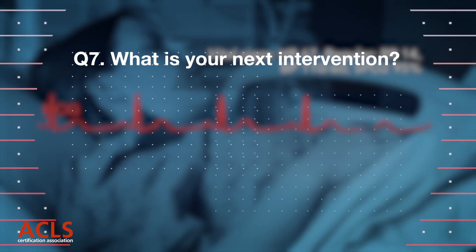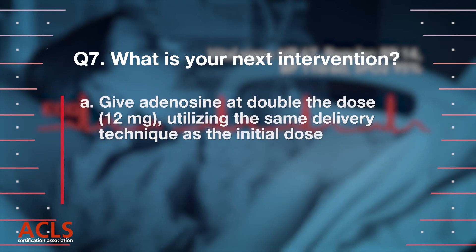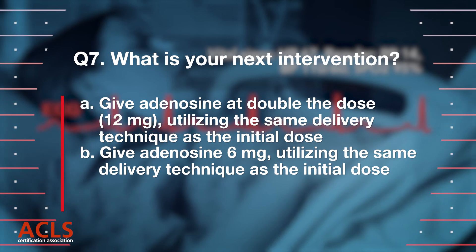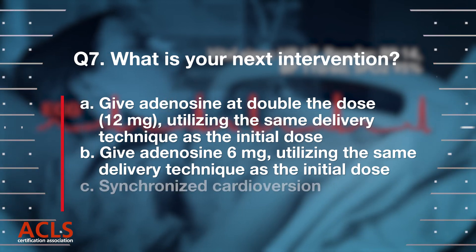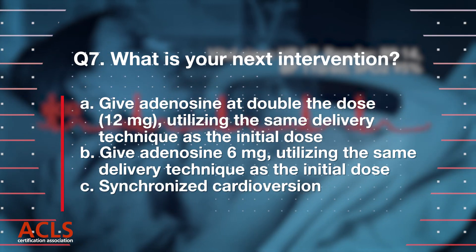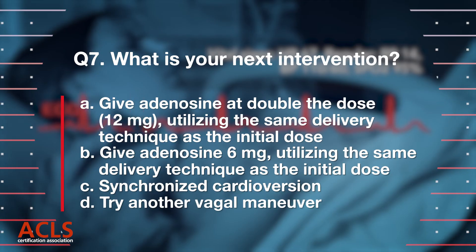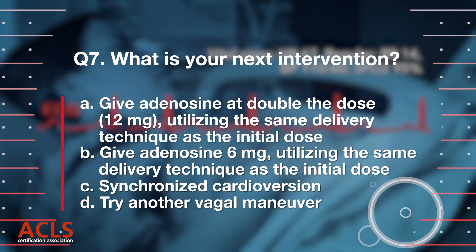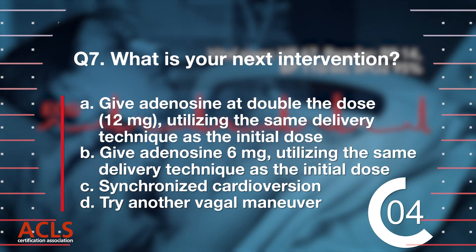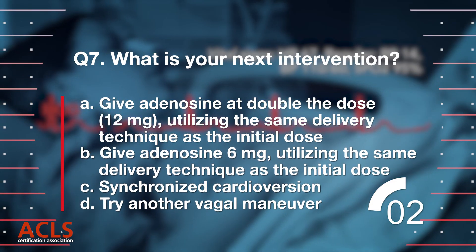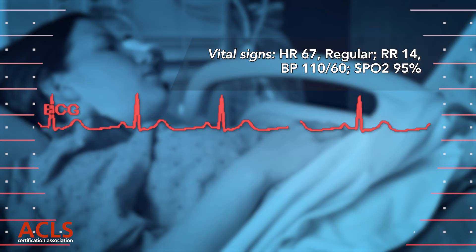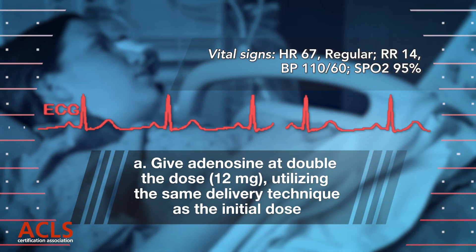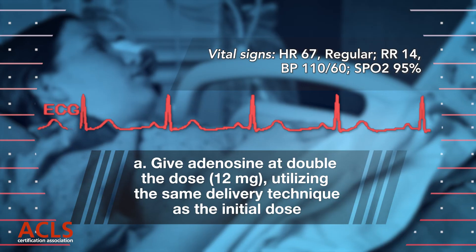What is your next intervention? Give adenosine at double the dose — 12 mg — utilizing the same technique.